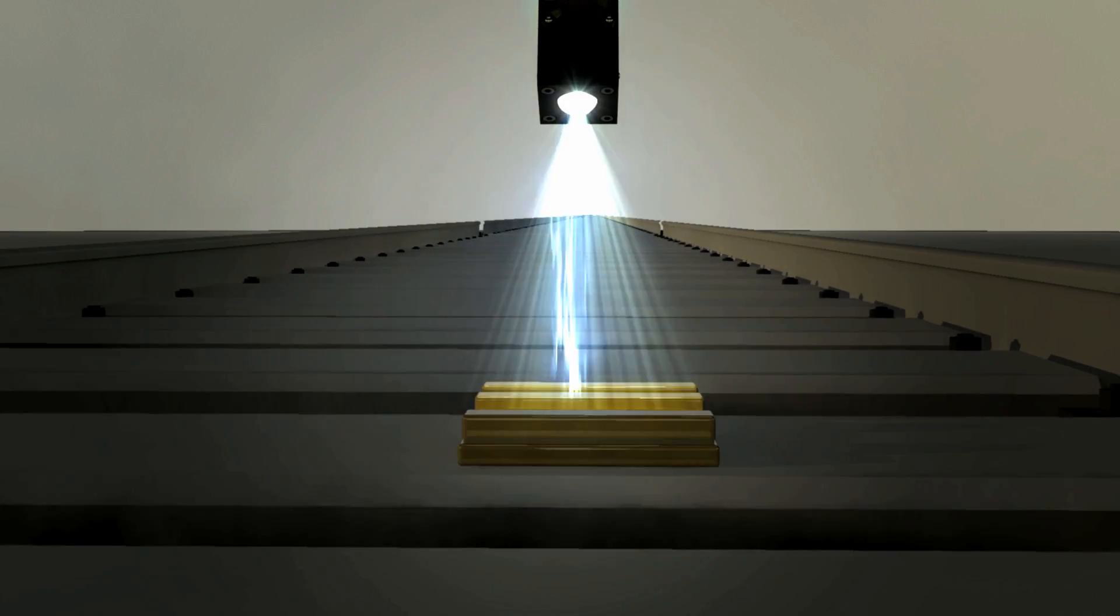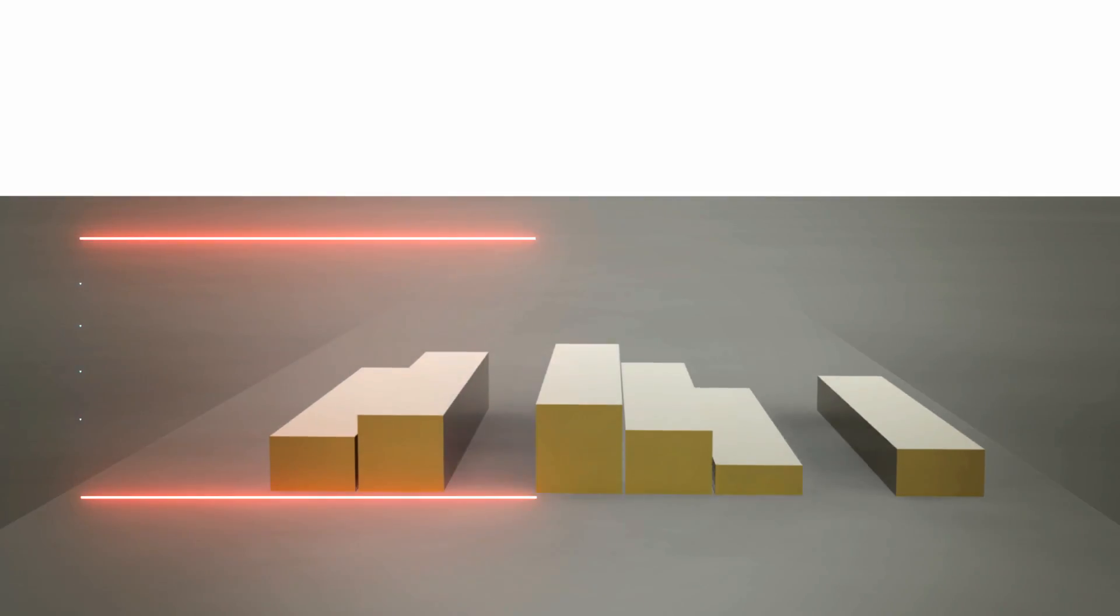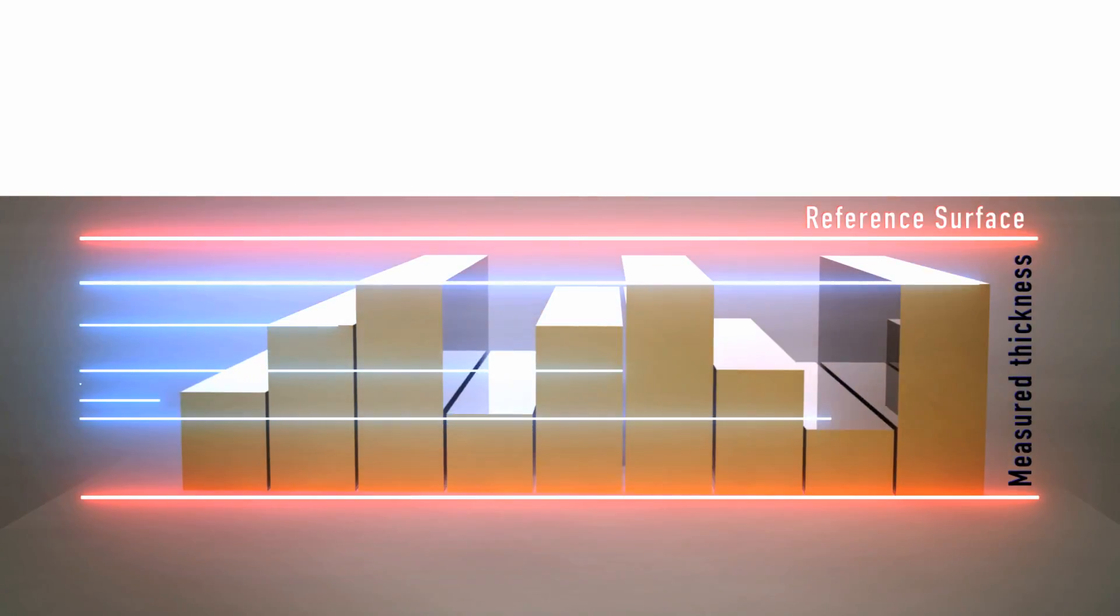This allows for instance the sleeper crossing detection in railway environments since the sleepers are uniform surfaces that contrast with the irregular profile of the ballast.